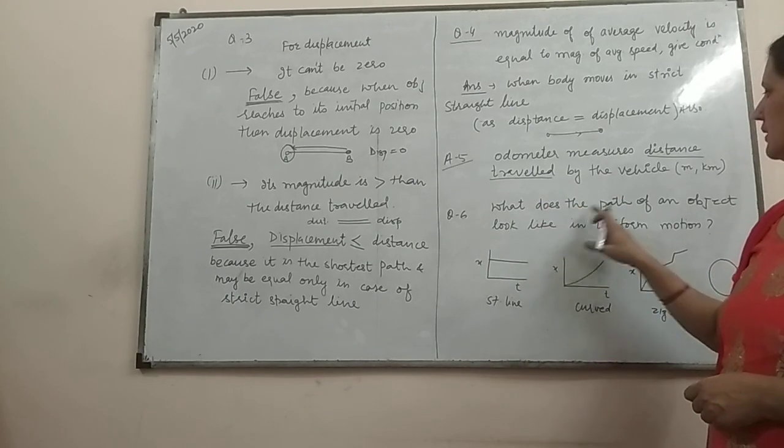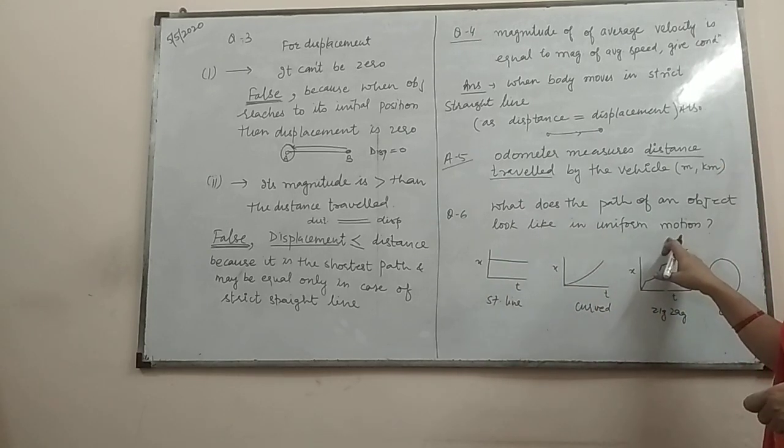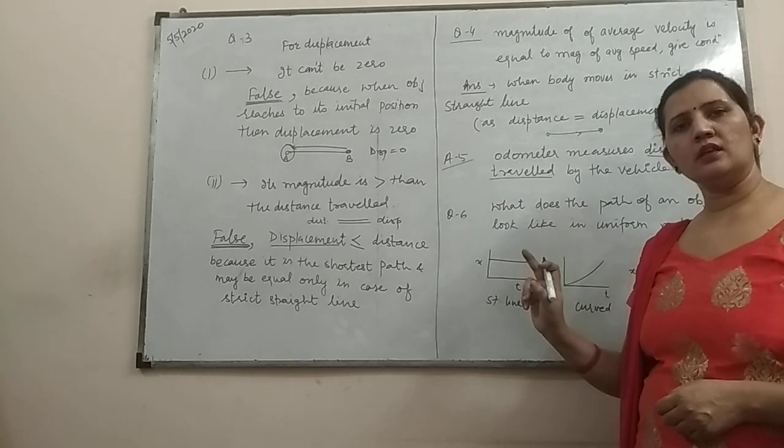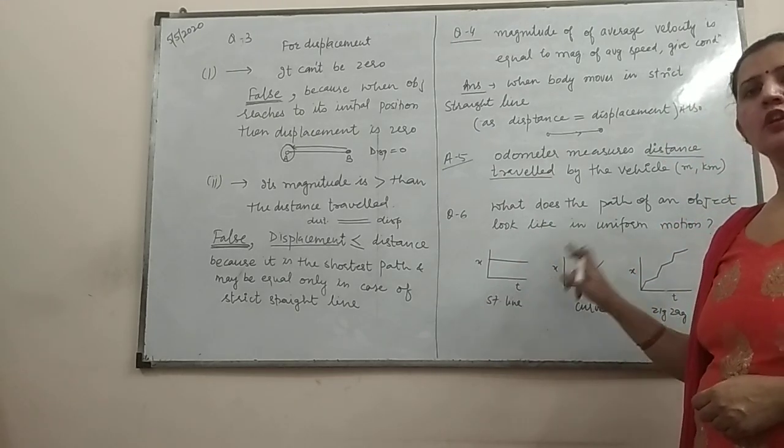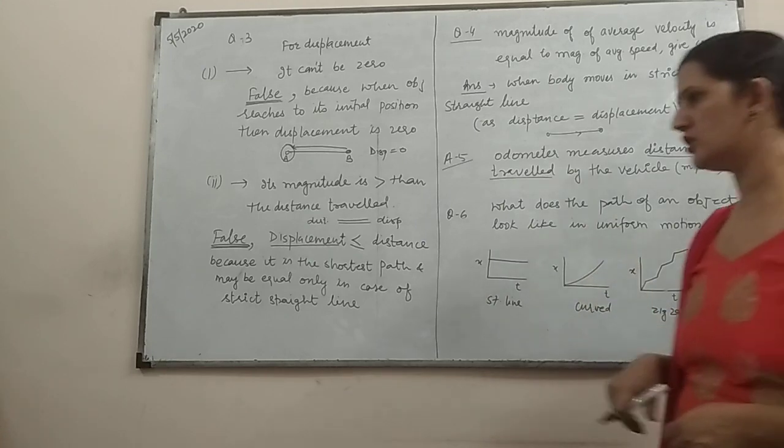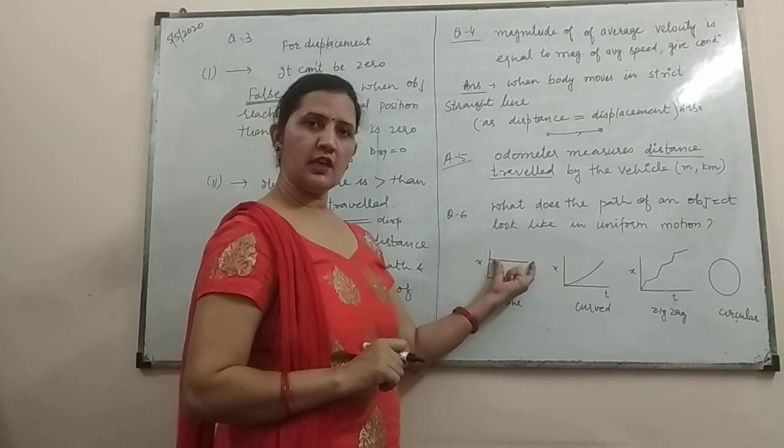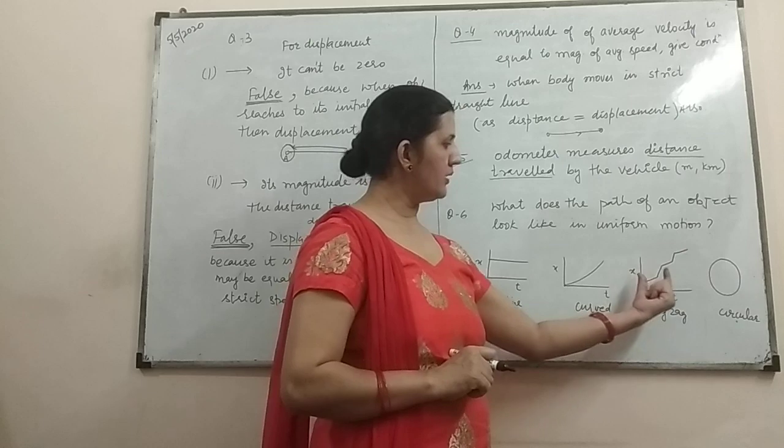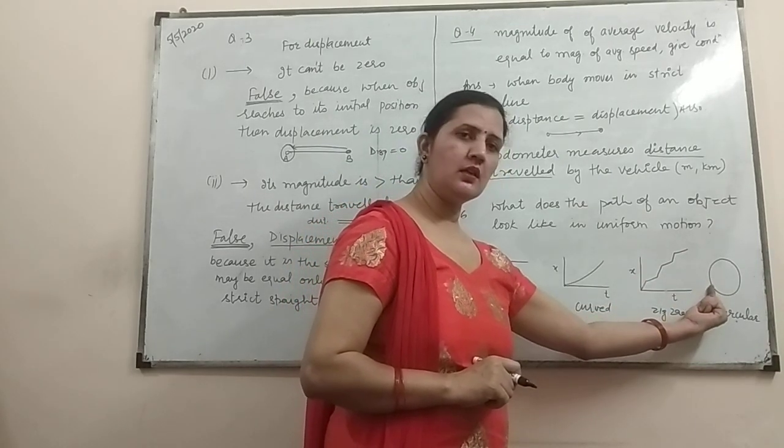Now, next question is, what does the path of an object look like in uniform motion? Uniform motion means when the object is travelling equal distances in equal interval of time. In that situation, the path may be a single straight line, the path may be a curved line and the path may be a zigzag line and it may be a circular path.